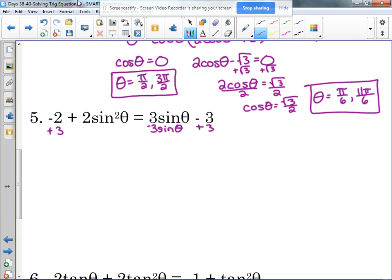So I'm going to add the three and subtract the three sine of theta, and I'm going to put that in standard form, meaning I'm going to put my squared term first, then my linear term, and then my constant term.